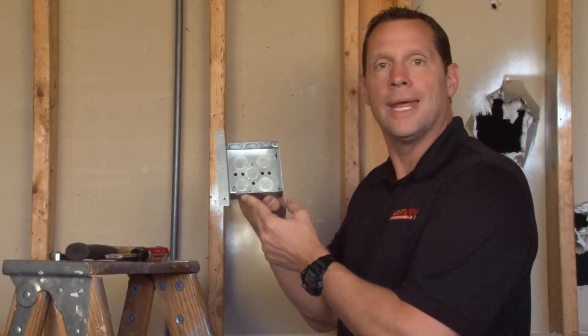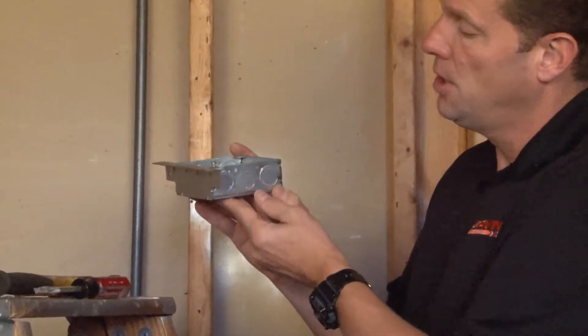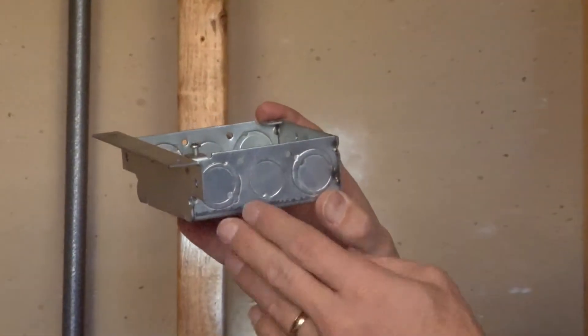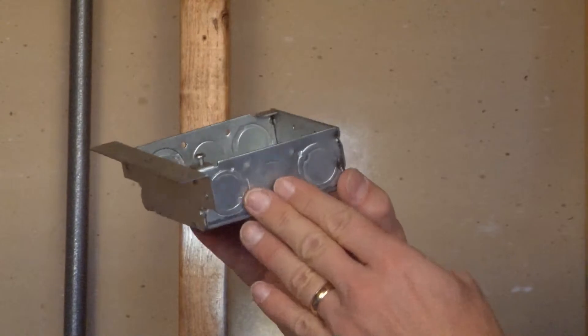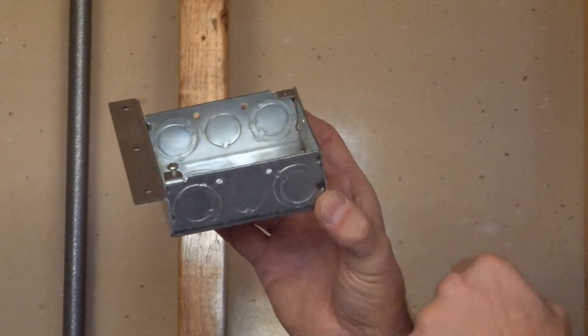Part number 52151AB is a 4-inch square electrical junction box with half and three-quarter inch concentric knockouts on each of the sides, as well as a straight half-inch conduit knockout on each of the sides.